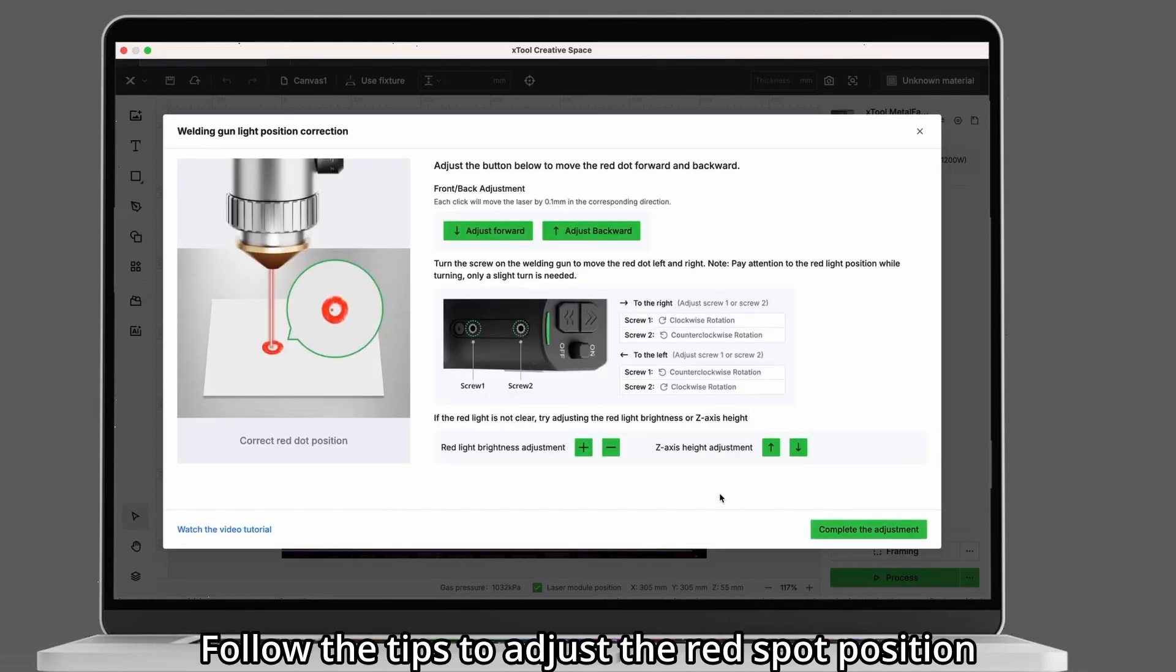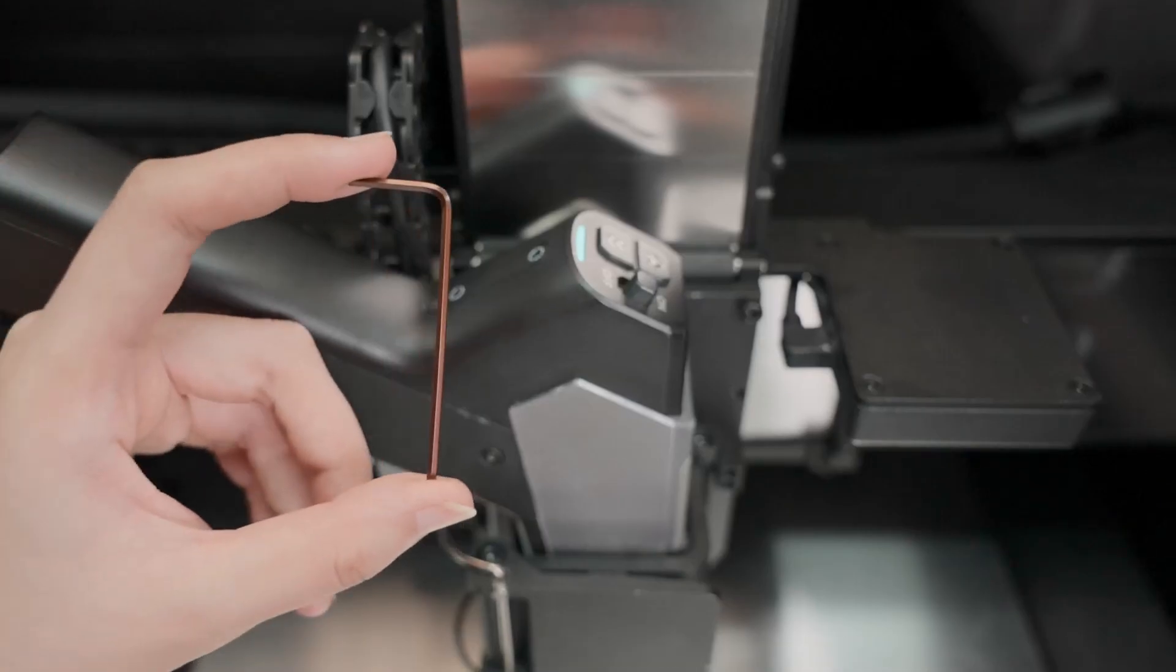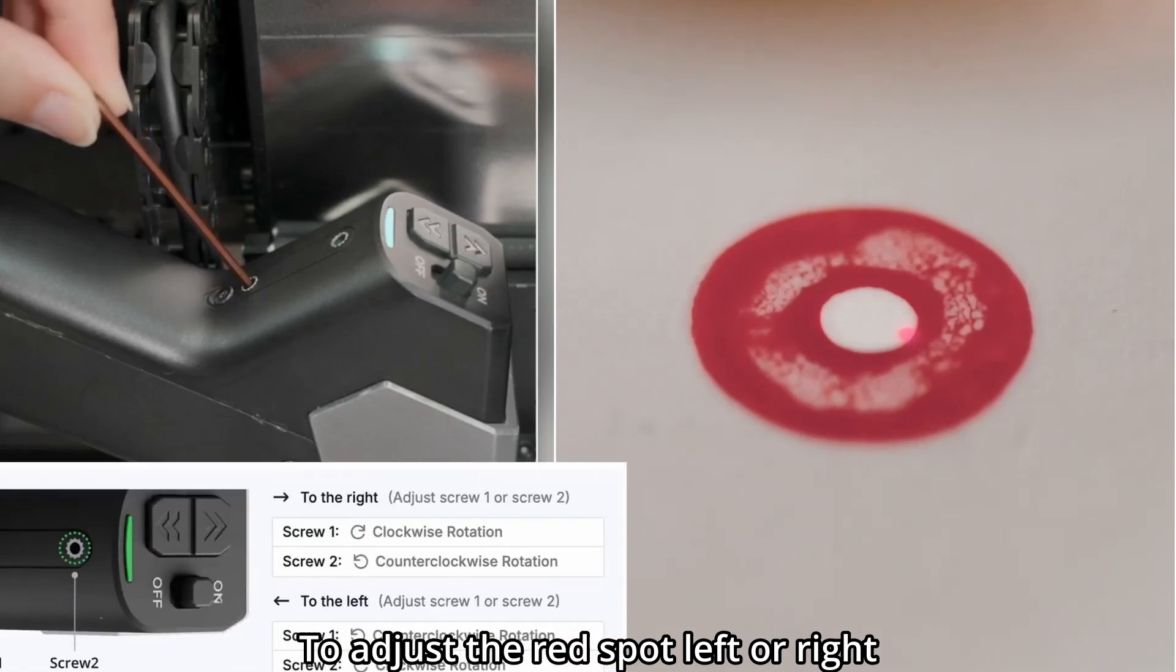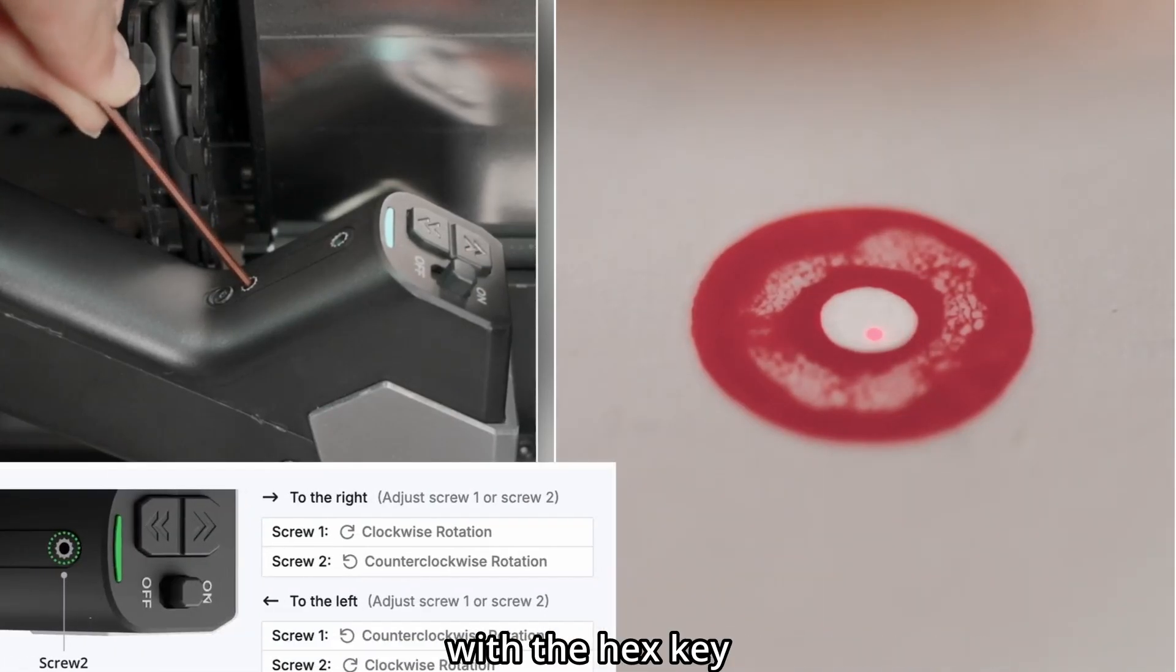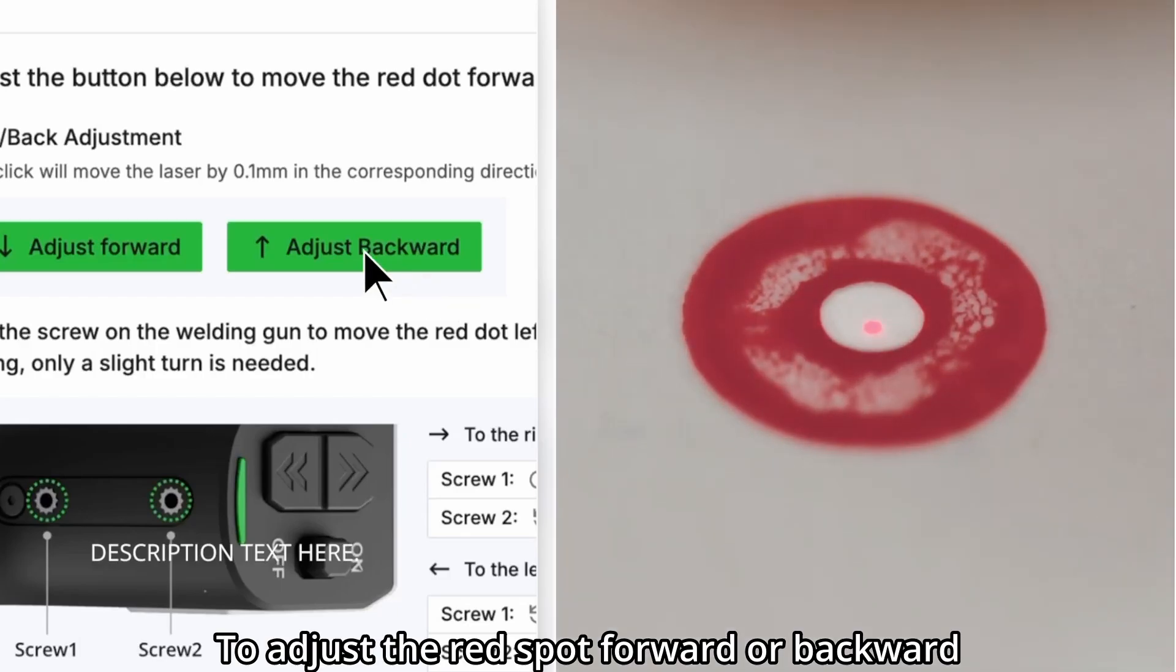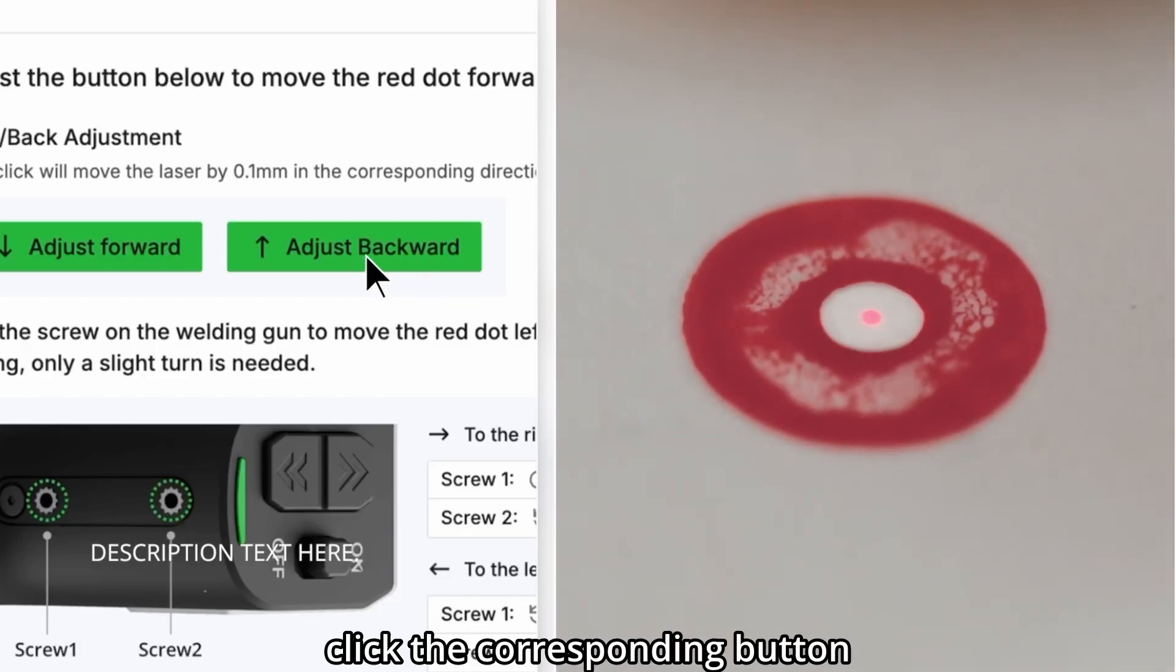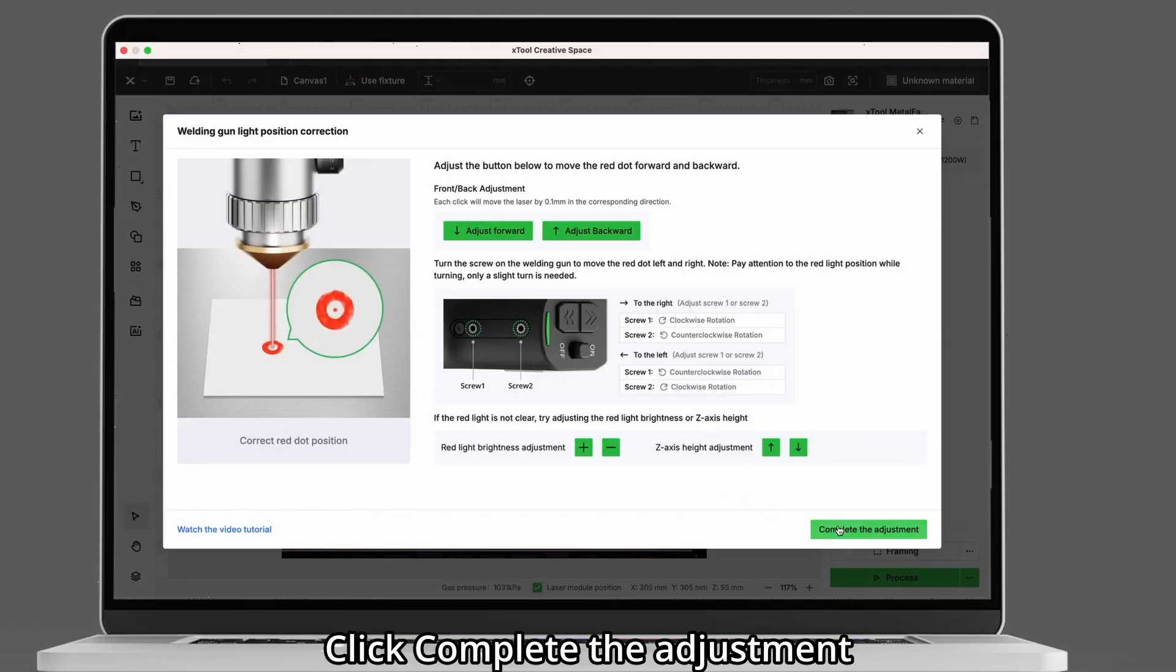Follow the tips to adjust the red spot position. To adjust the red spot left or right, gently loosen or tighten the welding head screws with the hex key. To adjust the red spot forward or backward, click the corresponding button. When the red spot is centered, click Complete the adjustment.